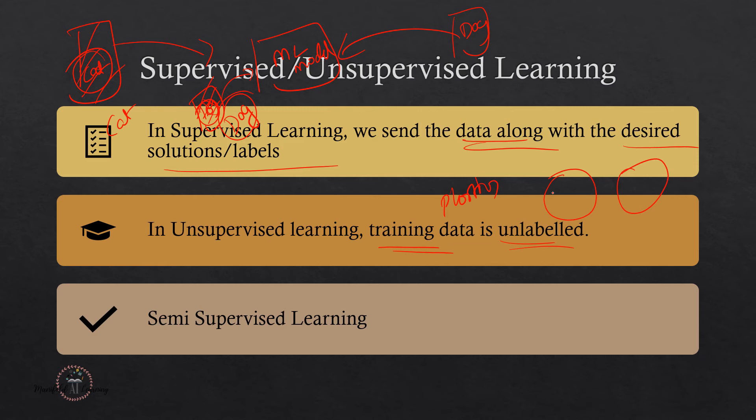We also have another type of learning called semi-supervised learning. We use it when we have a large number of unlabeled data and only a few labeled data. The example can also be Google Photos — Google Photos will ask you to name a few labels, meaning it will ask your help in identifying a few images, and based on that information it will automatically label the remaining images. That is a use case of semi-supervised learning.